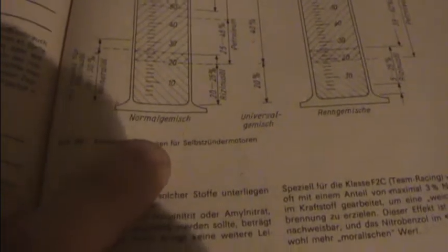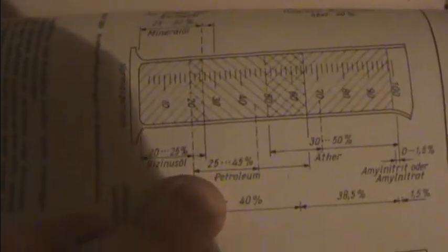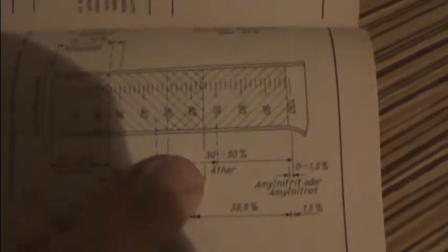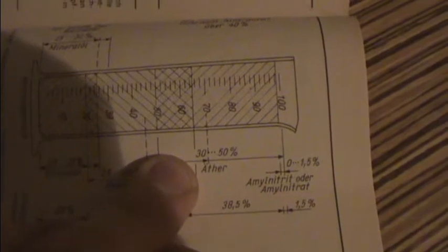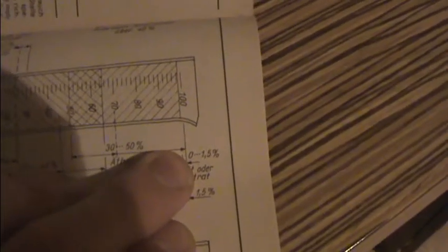A normal mixture consists of 20-25% of castor oil, 25-45% of petroleum, 30-50% of ether, and for addition 0-1.5% of amyl nitrate or amyl nitrite.